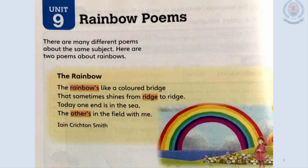There are many different poems about the same subject. Here are two poems about rainbows. Let's read the first one: 'The Rainbow.' The rainbow's like a colored bridge that sometimes shines from ridge to ridge. Today one end is in the sea, the other's in the field with me.